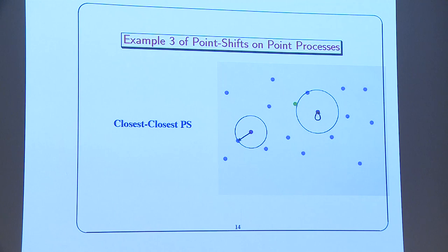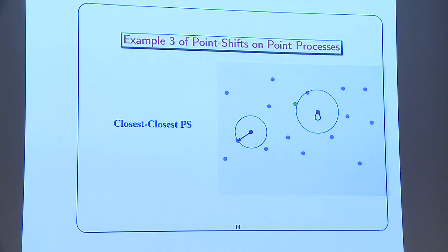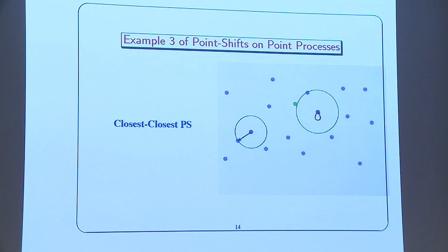There are more surprising examples. The closest-closest point shift: if point A's closest neighbor is point B, and B's closest neighbor is also A, this creates an involution — A goes to B and B goes to A. Points with no mutual closest neighbor get the identity map. It's a point shift because you decide based on the local configuration where to go.